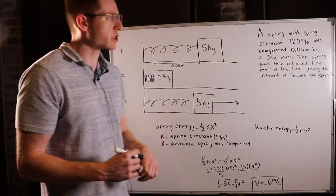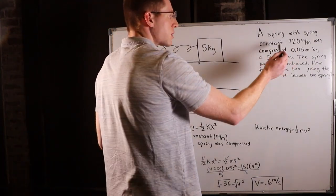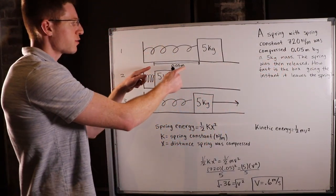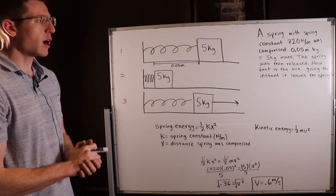720 newtons per meter, and that sort of tells you how tough the spring is to compress. And we say it was compressed 0.05 meters by a 5 kilogram mass. Then the spring was released. How fast